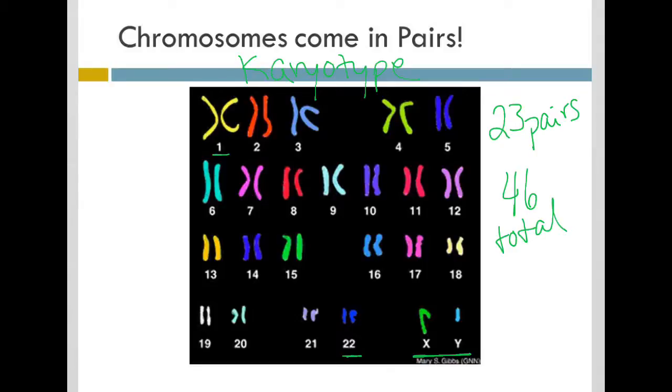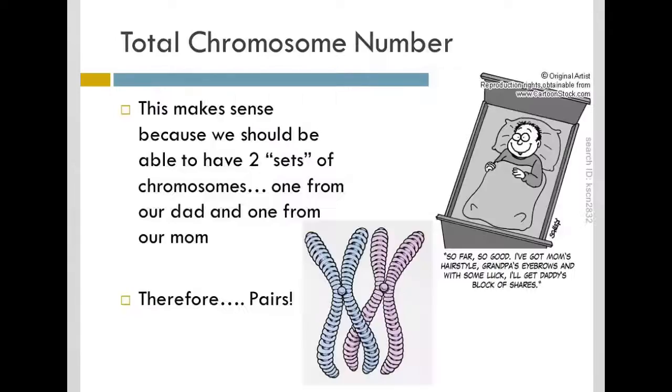And they always come in pairs, and the pairs are very similar in size and shape. And in fact, they will have the same genes on them, or similar genes. And again, this idea that our chromosomes come in pairs, this makes sense, because we should have basically two sets of chromosomes, one from our dad and one from our mom, because we understand that that's how we got our genetic code. Therefore, things come in pairs.